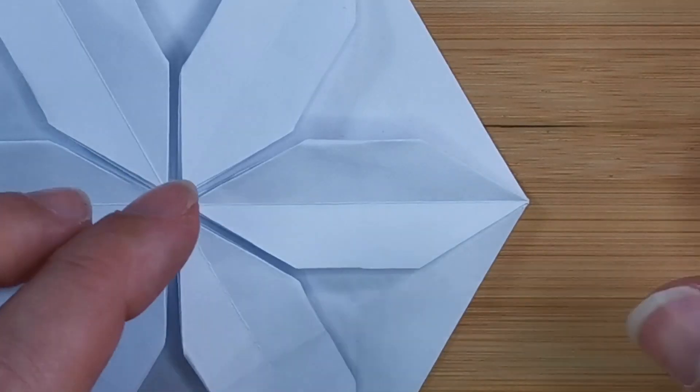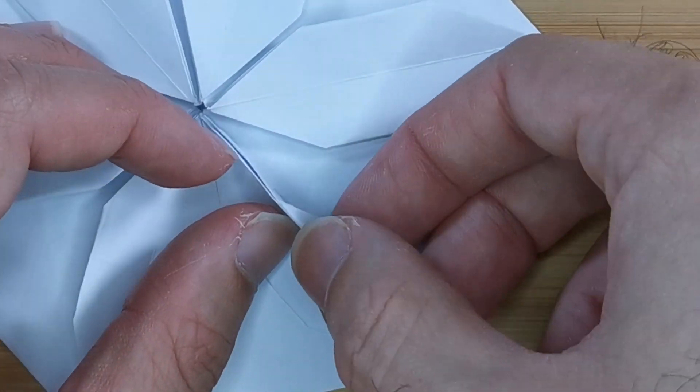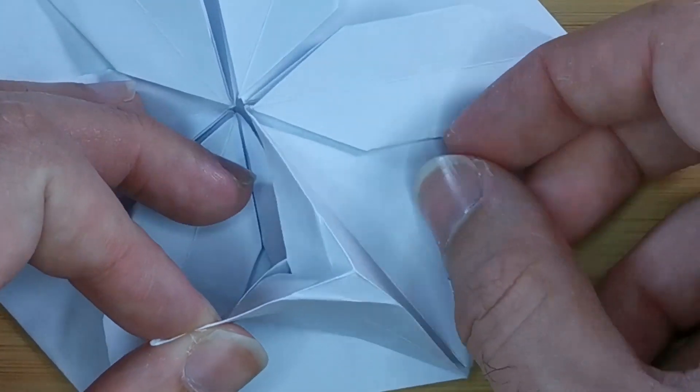We're going to use the creases we just made to make open sink folds on each flap. So unfold the branch like this.